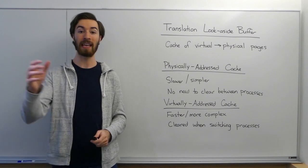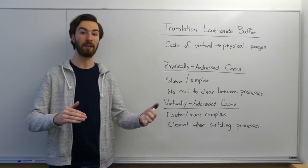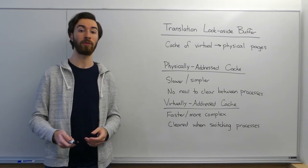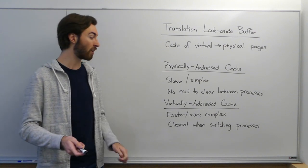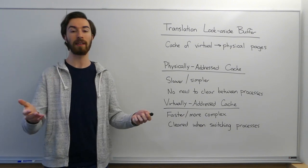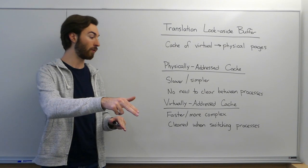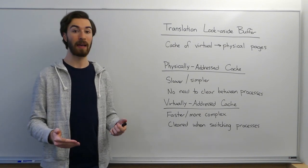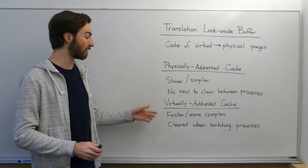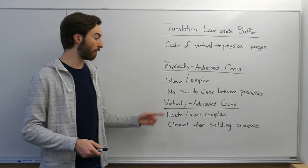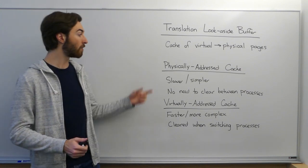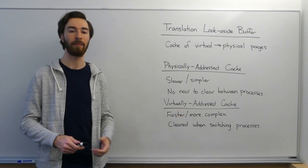The virtually addressed cache, on the other hand, takes in a virtual address and gives the data that should be stored at that virtual address. That's faster because you don't need to translate your virtual address to a physical address before accessing the cache. But it's more complex because two different processes could have the same virtual address that map to different spots in physical memory. And at the same time, you could have two processes that are mapping to the same spot in physical memory under different virtual addresses. That means that every time you swap from one process to another, the virtually addressed cache would need to be invalidated, completely cleared, all of its dirty blocks written back, as opposed to the physically addressed cache where there's no need to do that between processes.